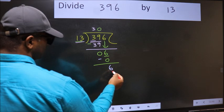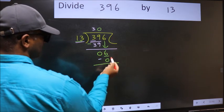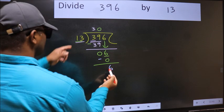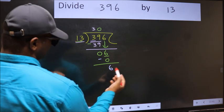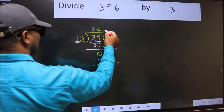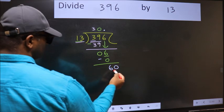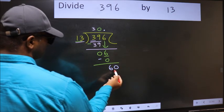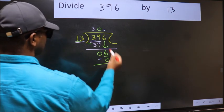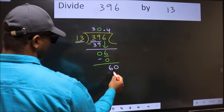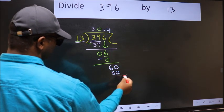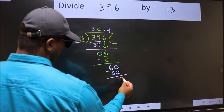Over here, we did not bring any number down, and 6 is smaller than 13. So now we can put dot and take 0. So 60. A number close to 60 in 13 table is 13 fours 52. Now we should subtract. We get 8.